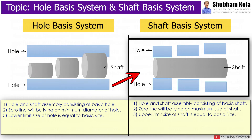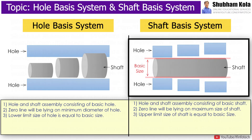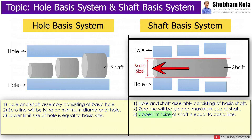If a hole and shaft assembly consists of a basic shaft, then that type of system is known as shaft basic system. That means for a hole and shaft assembly, the zero line will be laying on the maximum size of the shaft. For this system, the upper limit of shaft is equal to basic size.